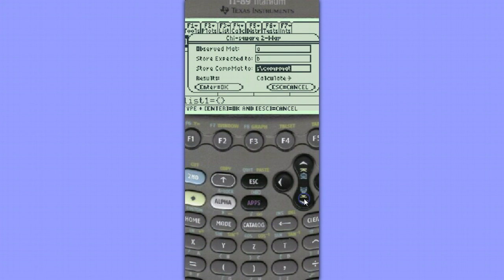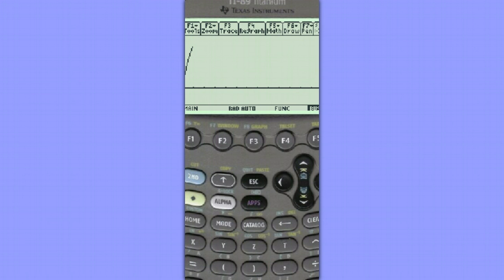But then when we come down here to calculate, choose draw, enter, and we see our Chi-squared distribution displayed along with our Chi-squared test statistic and the p-value.